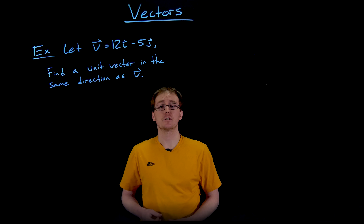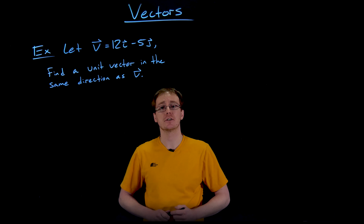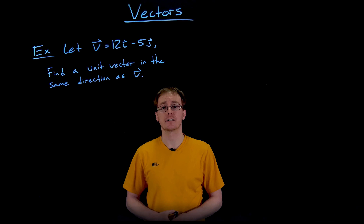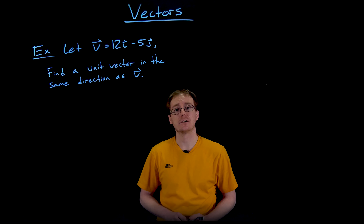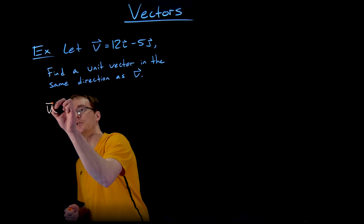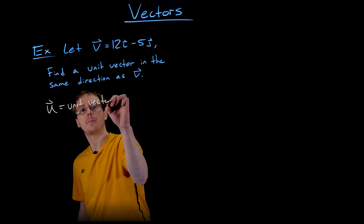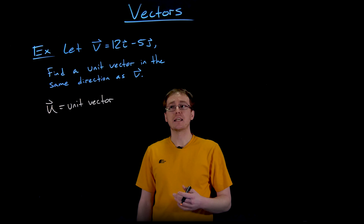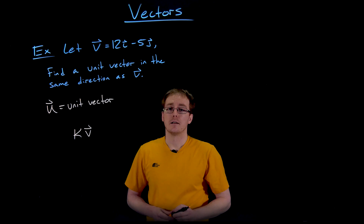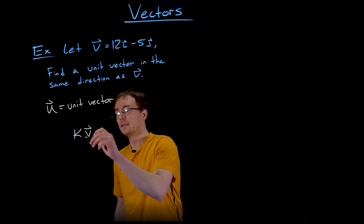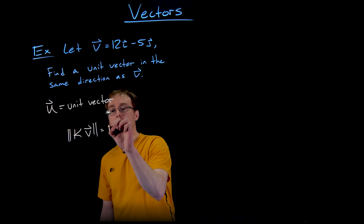In this example we are given a vector v which is 12i minus 5j and we are asked to find a unit vector that is in the same direction as our starting vector v. A unit vector is just a vector with a length or magnitude of 1. We need to scale our vector v appropriately so that it becomes a vector of length 1, so we're going to take a scalar multiple of our vector v such that its magnitude equals 1.